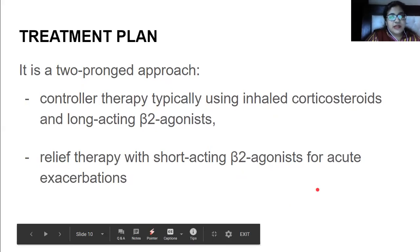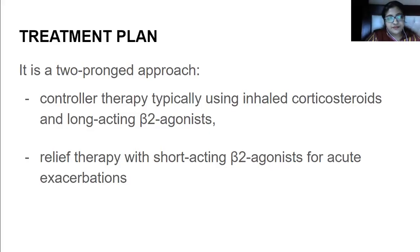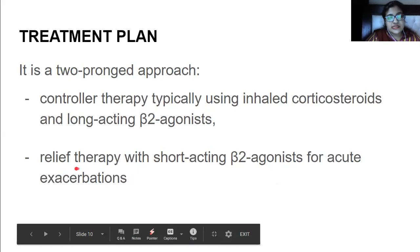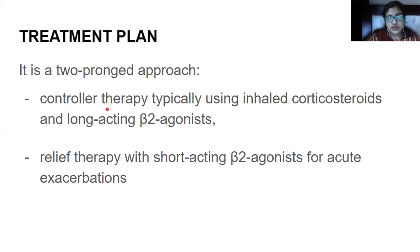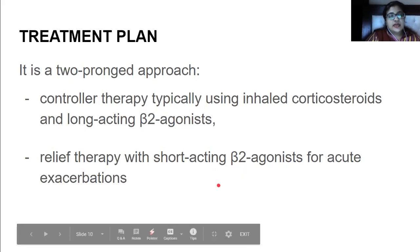The treatment plan for asthma is a two-prong approach. We have relief therapy and controller therapy. For controller therapy, we typically use corticosteroids in inhalation form along with long-acting beta-2 agonists. Relief therapy uses short-acting beta-2 agonists for acute exacerbations.